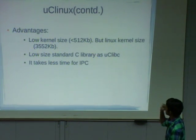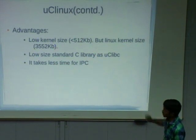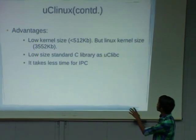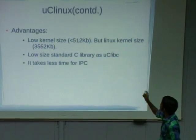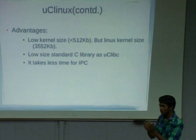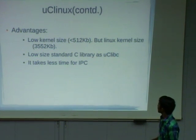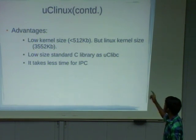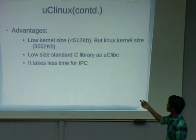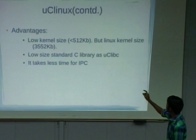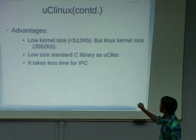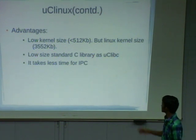Coming to the advantages of UC Linux. The UC Linux kernel size is 512 KB, but the original Linux kernel size is 3500 KB — see the difference. If you use this type of operating system for embedded systems, you use much less space in RAM. Also, UC Linux has another standard C library — it does not use the GNU standard C library, to occupy less space. Coming to IPC, UC Linux takes less time for inter-process communication among different processes compared to Android architecture.